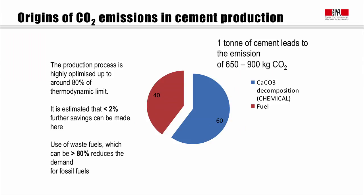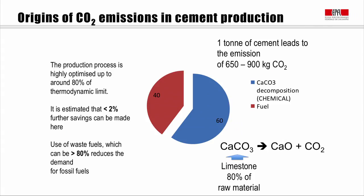To make improvements, we need to turn to the other side — this 60% of the equation. This 60% comes from the breakdown of calcium carbonate into calcium oxide and CO2. Calcium carbonate is in fact limestone, which is 80% of the raw material used to make cement. The fact that we have this chemical CO2 means that if we're going to reduce it, there are implications for the chemistry of the cement and for the whole way it behaves in use, which is a big challenge.